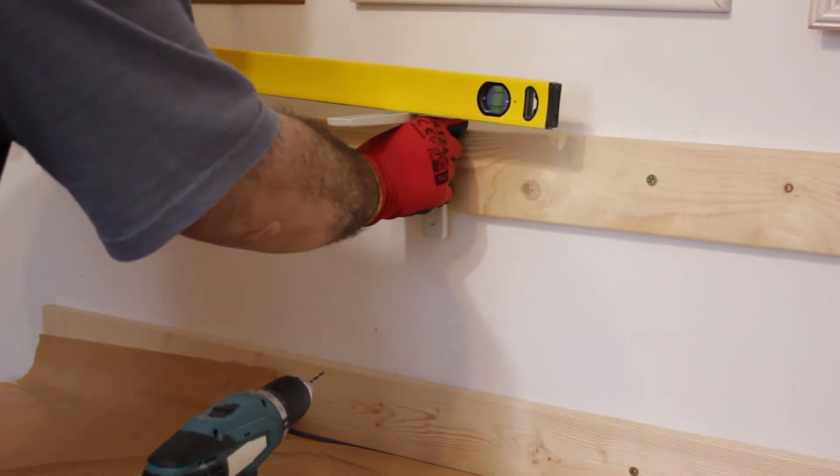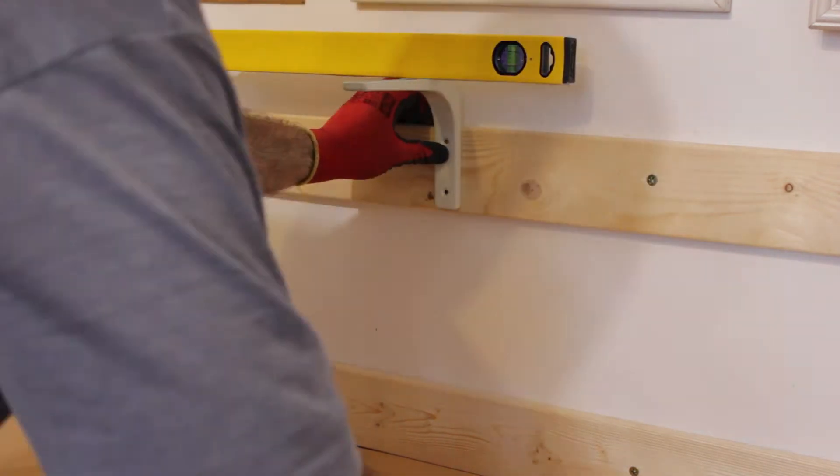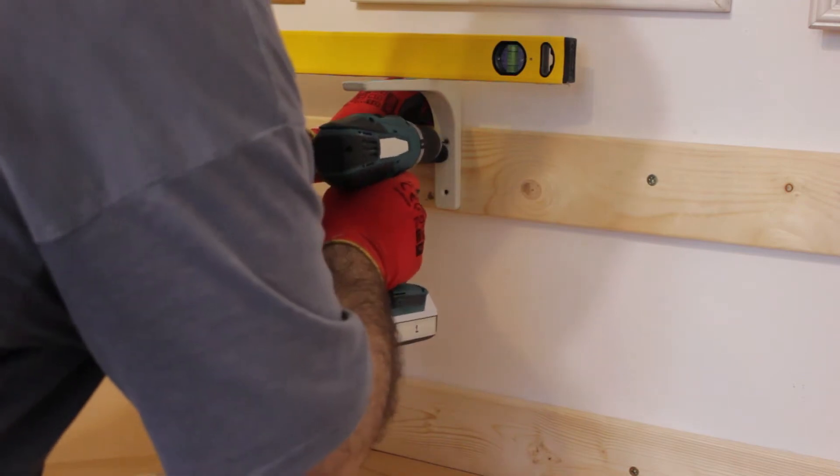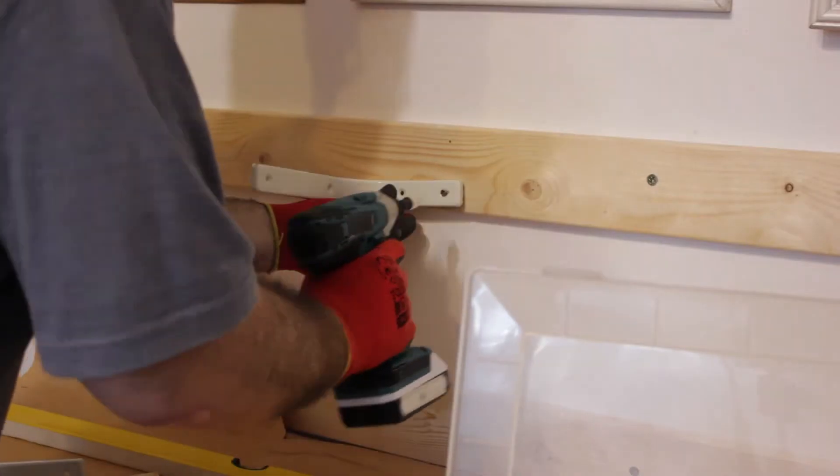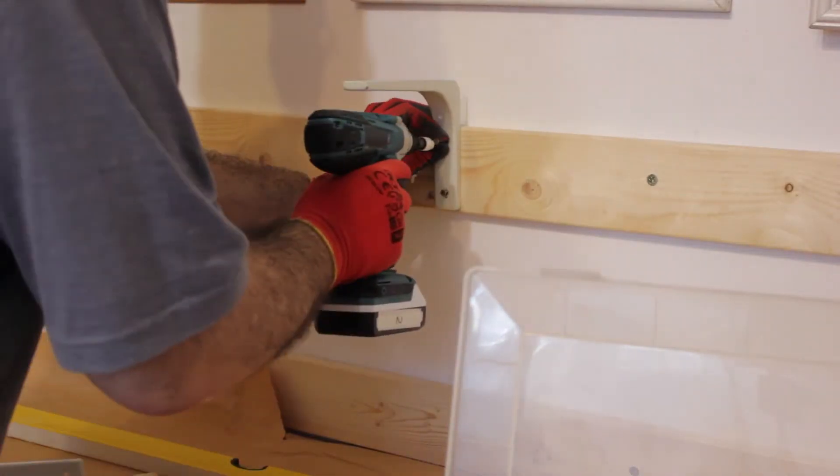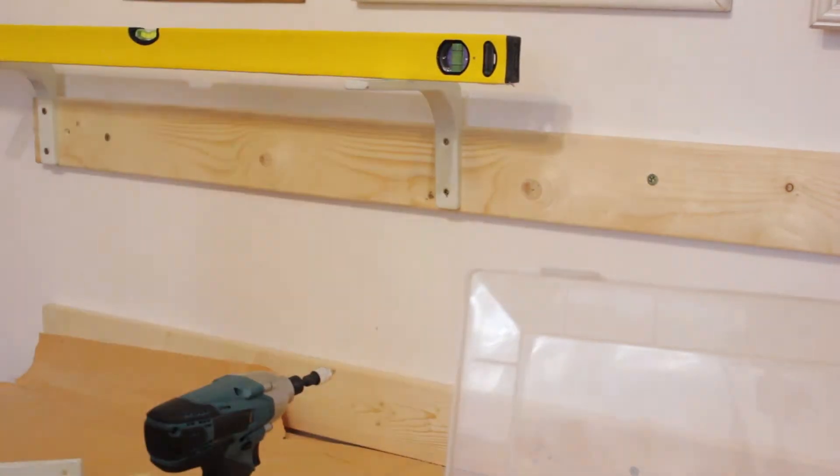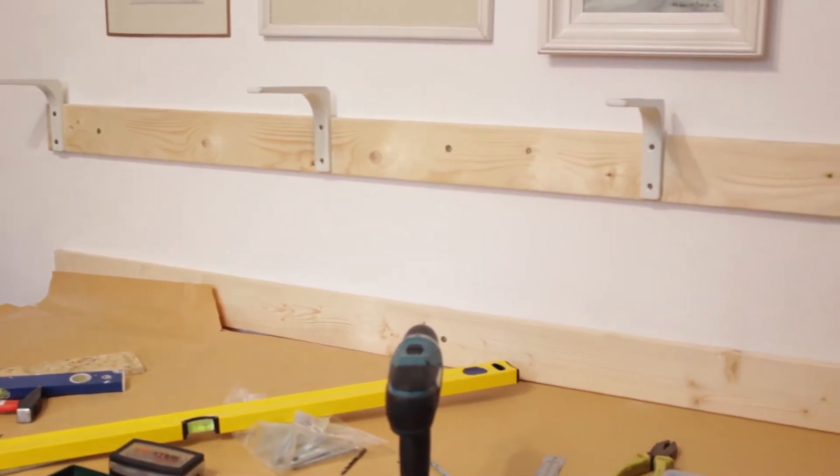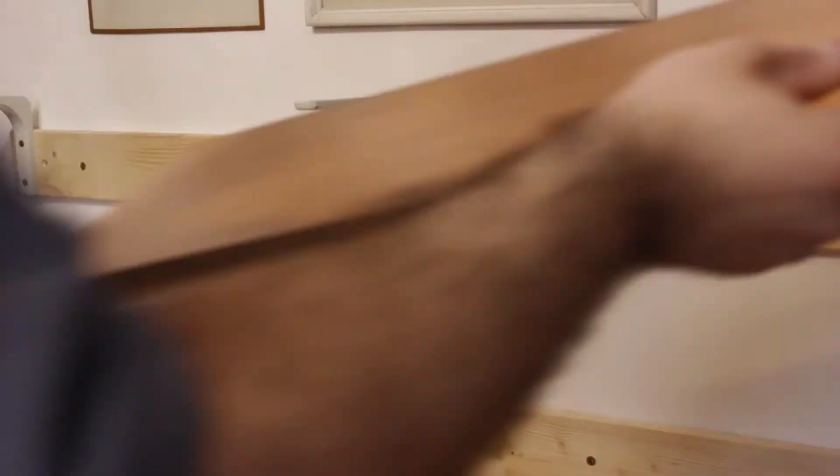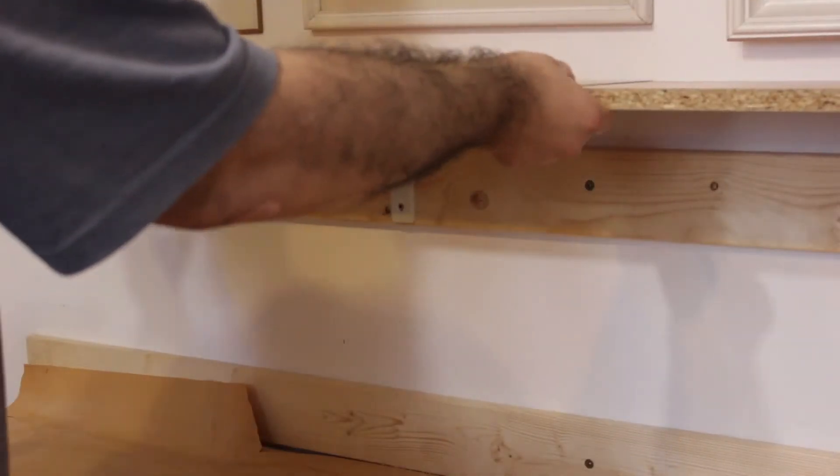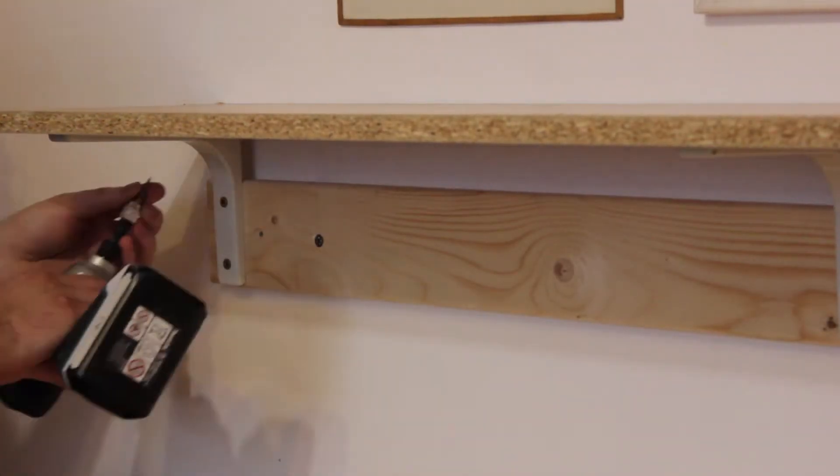With the plank screwed to the wall, I attached the following L brackets once they were leveled. I used some leftover pieces of melamine for the shelves. These were screwed in from the bottom so that they wouldn't move around.